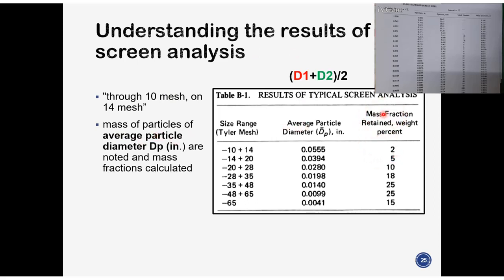First of all, let's revisit mass fraction retained. What does this column say? This says that if you have a sample of particle and you do the sieve analysis, 2% of your sample falls through the 10 mesh and ends up on the 14 mesh. Since 10 mesh has an opening diameter of 0.065 and 14 has an opening diameter of 0.046, the average diameter of this 2% sample is 0.0555. So 5% of your sample will have an average diameter of 0.0394 and so on.